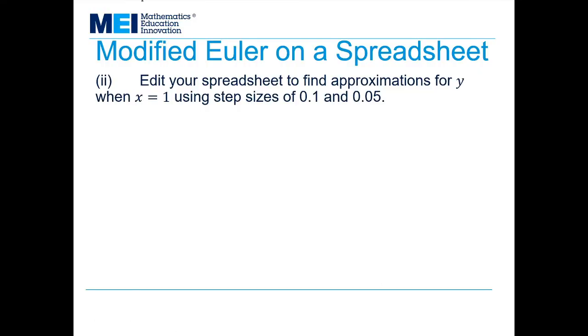So just writing that up. For h equals 0.1, I got that y was 1.90450. For h equals 0.05, I got y equals 1.90475.